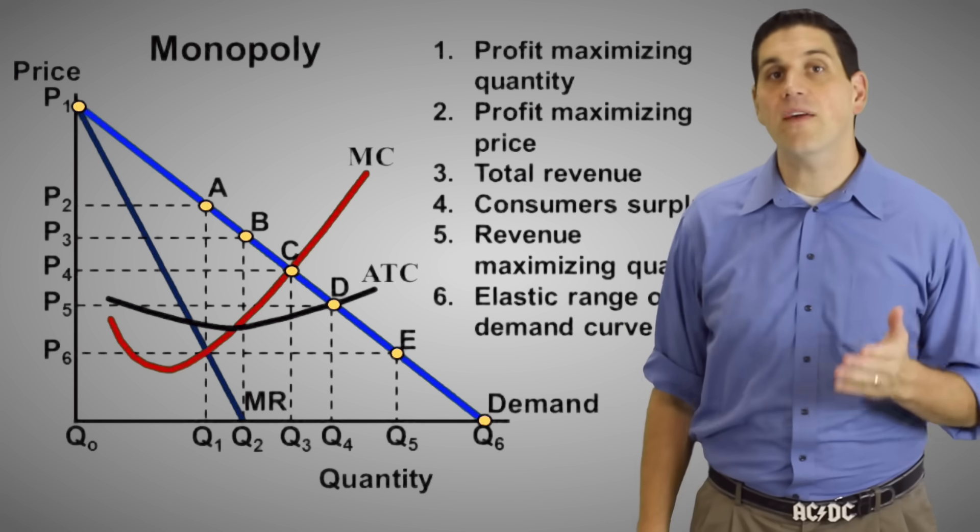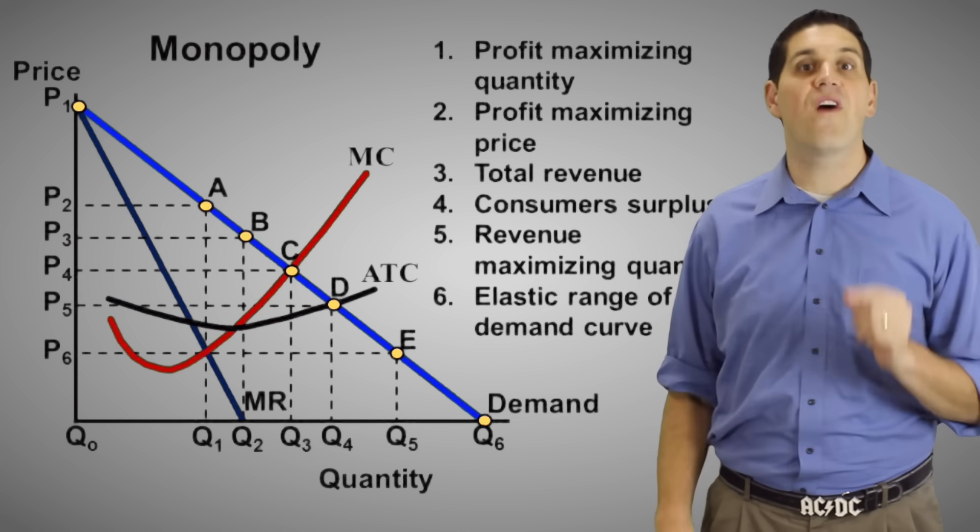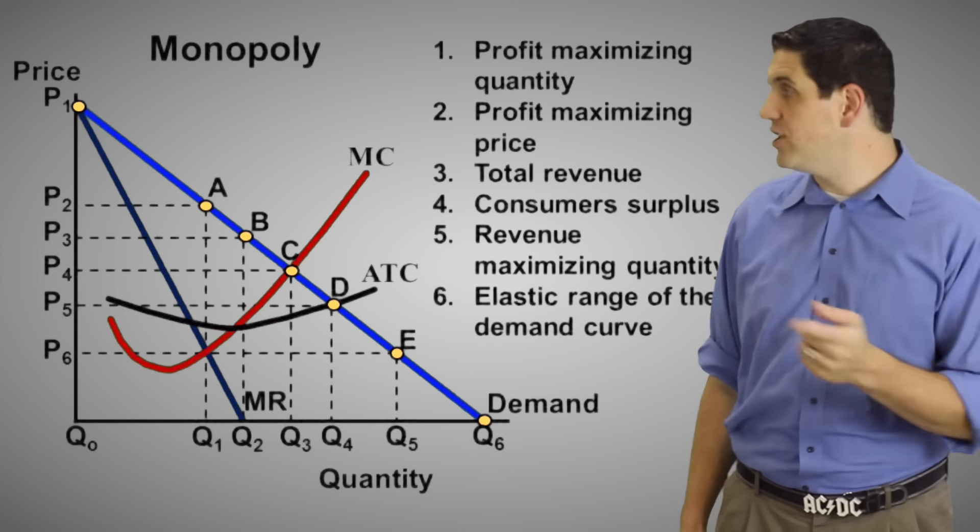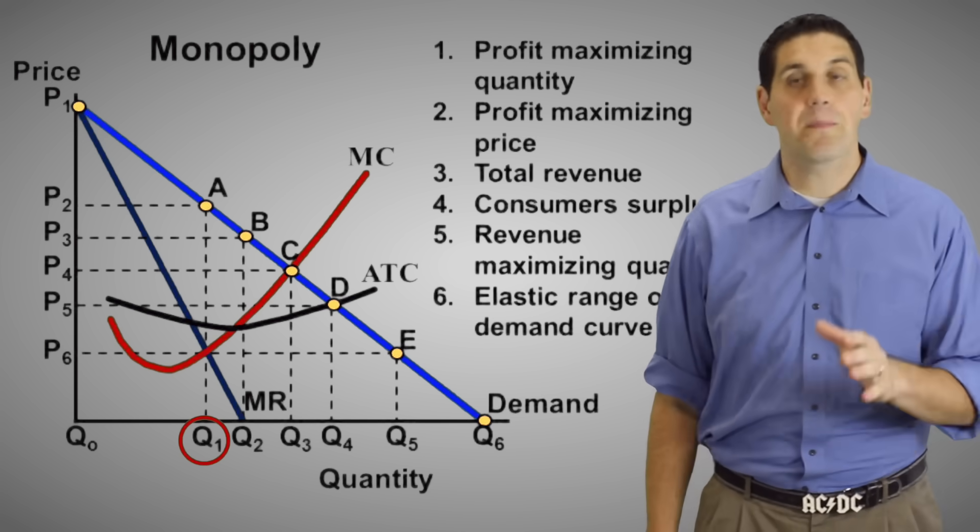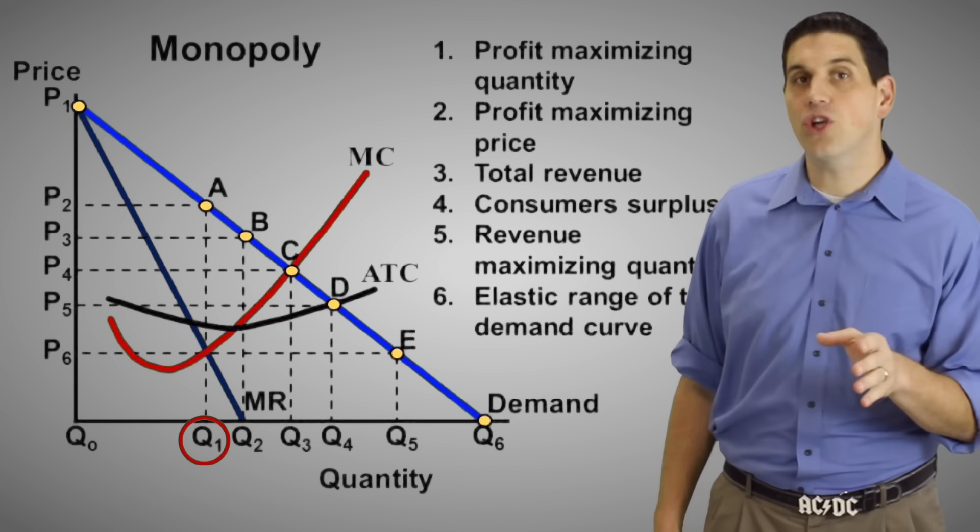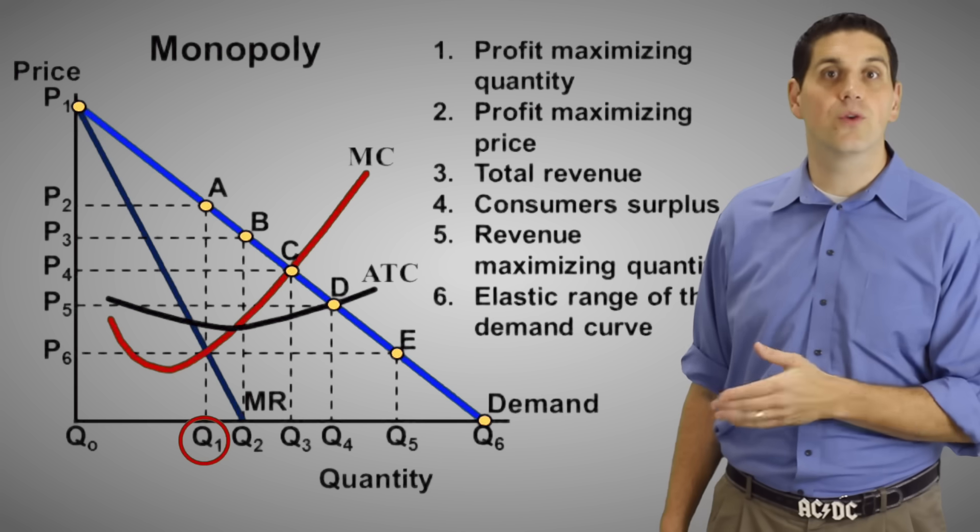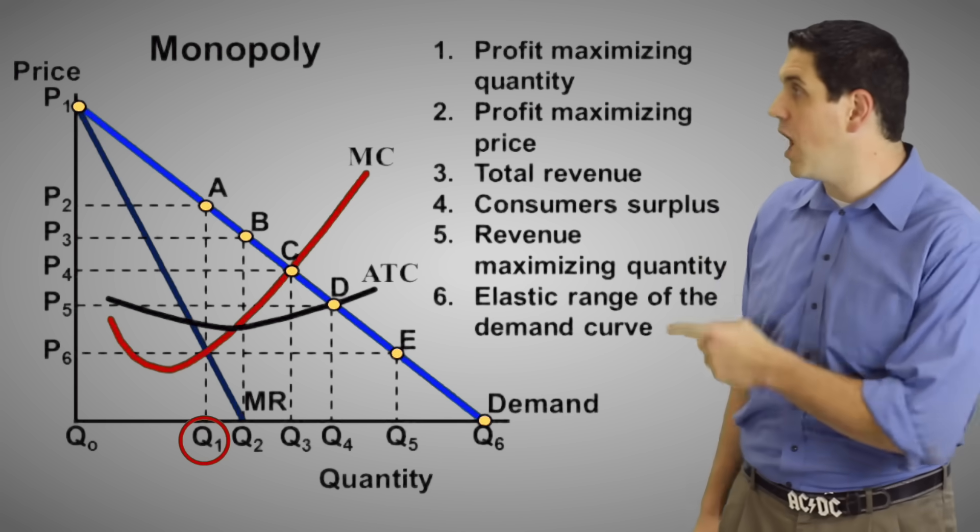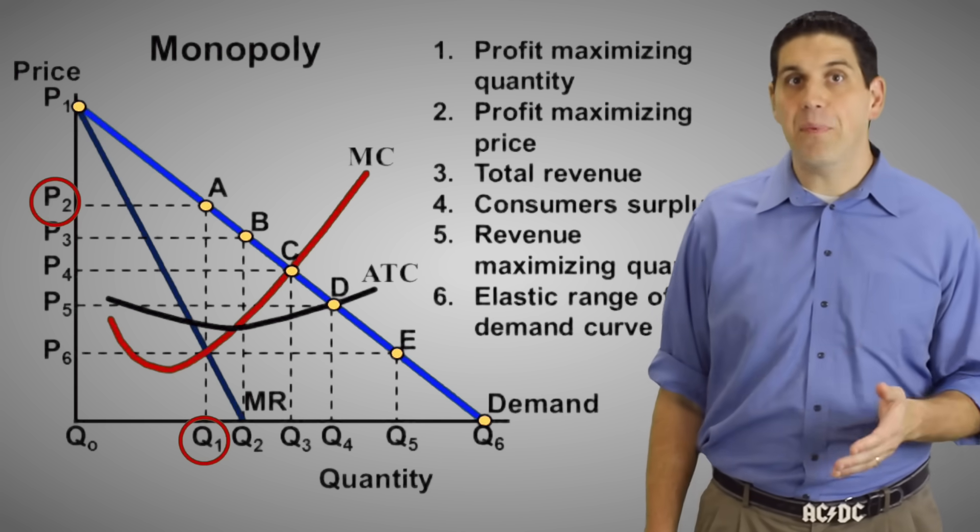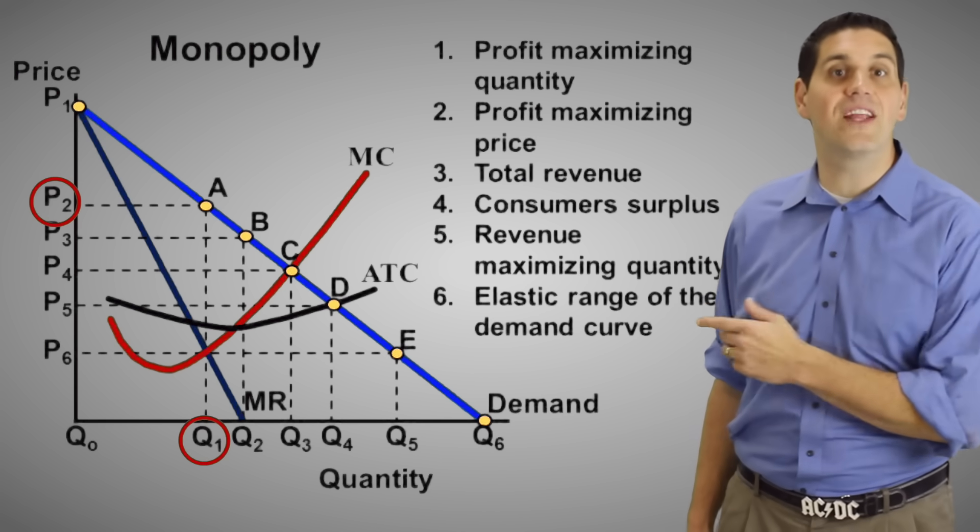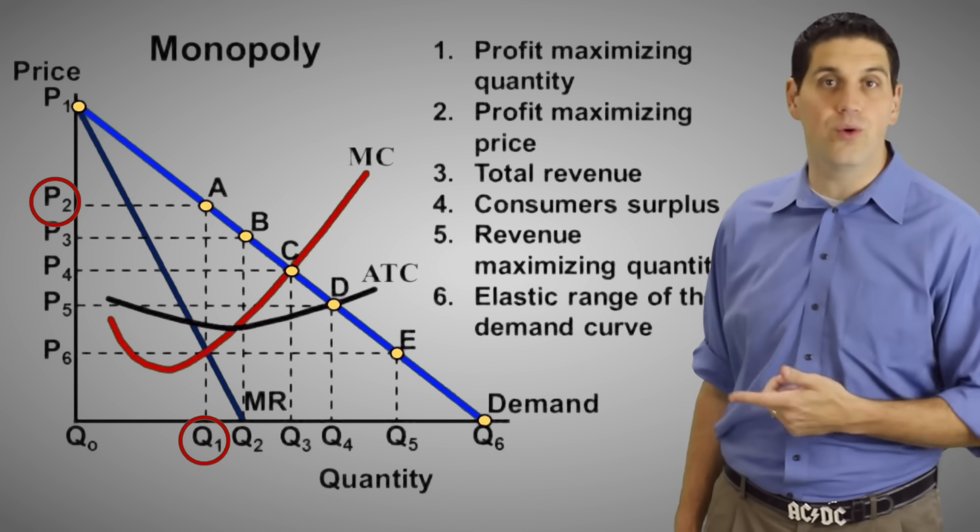To figure out the profit maximizing quantity, you do what you do for all firms. You find where MR hits MC. And on this graph, it's right here at Q1. But the price is not P6. You don't charge the price where it hits the marginal revenue. You charge what people are willing to pay, which is up here at P2. So for a monopoly, they produce where MR equals MC and they charge a price up the demand curve, which is right there at P2.